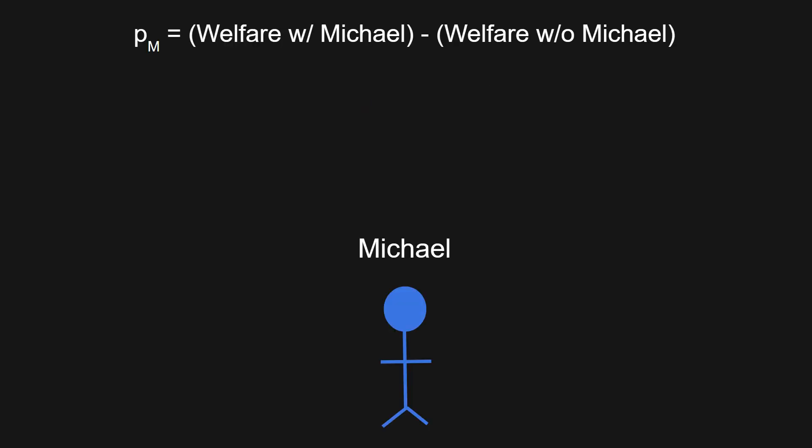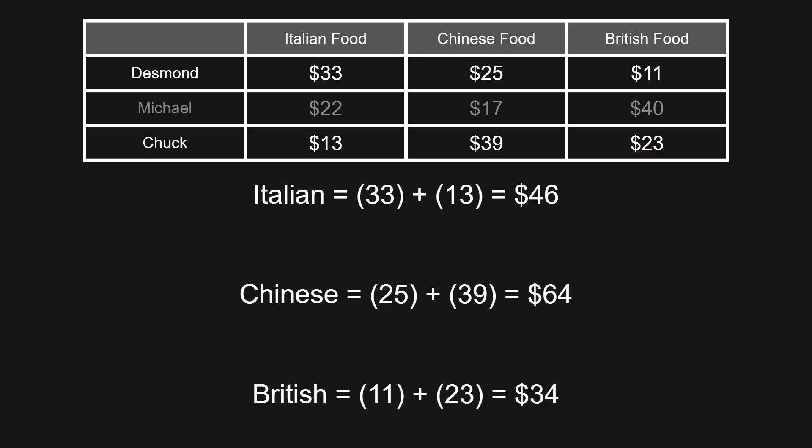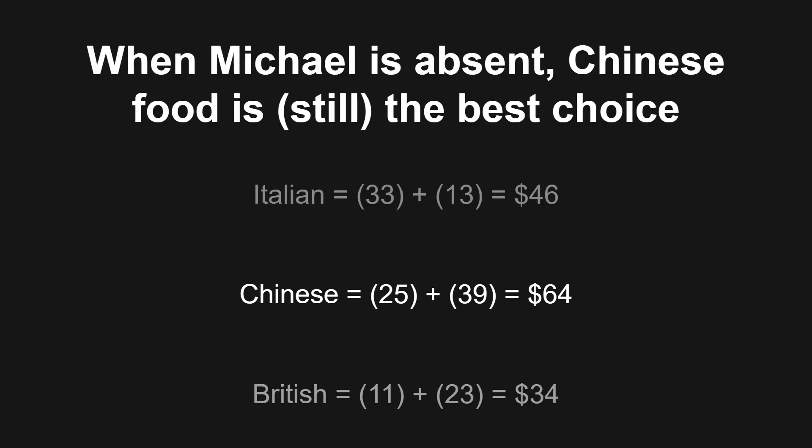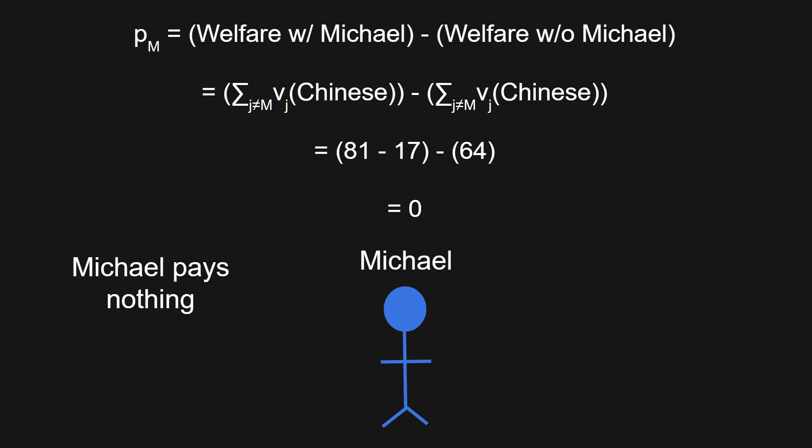Now let's calculate Michael's payment. We need to find the outcome we would have chosen if Michael was absent. We sum up each person's values while ignoring Michael and find which gives the most social welfare. In this case, it's Chinese food, yielding a social welfare of $64. So even when Michael is absent, we still end up selecting Chinese food. Because we're selecting Chinese food whether or not he's taken into account, the welfare of the others when he's present equals the welfare when he's absent, so his payment ends up being $0.